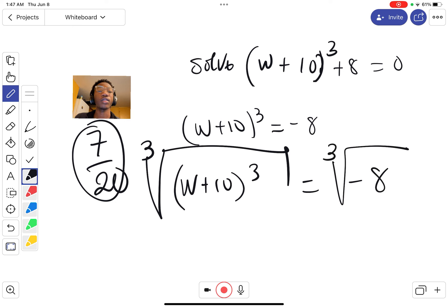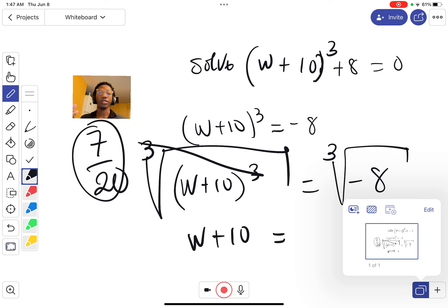The cube and cube root cancel out, so we have w + 10. We need to find a number that multiplies by itself three times to give -8. That number is -2, because (-2)³ = -8. So w + 10 = -2.